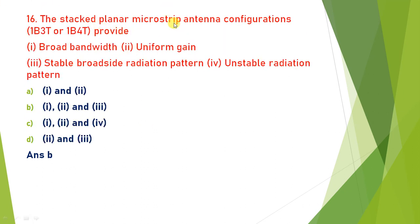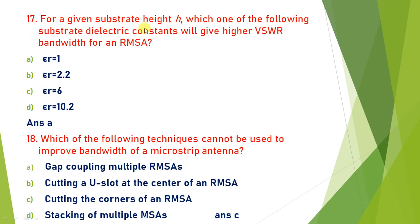Stacked planar microstrip configurations generally provide broader bandwidth, uniform gain, and stable radiation pattern — the answer is B (options one, two, and three). For a given substrate height H, epsilon_r = 1 provides higher VSWR bandwidth — answer is A. Cutting corners of RMSA decreases bandwidth, so corner cutting cannot be used to improve bandwidth — answer is C.